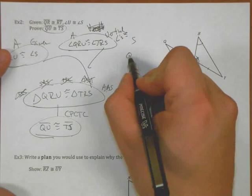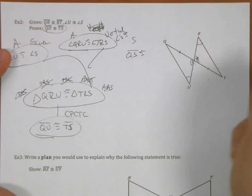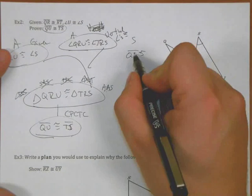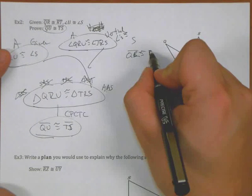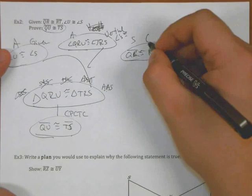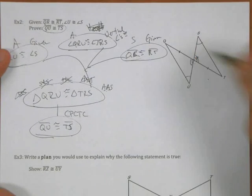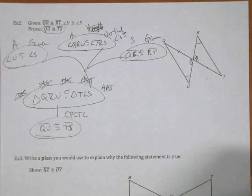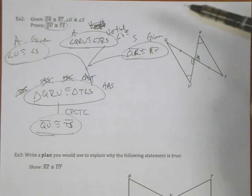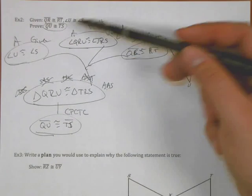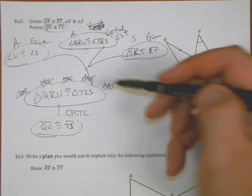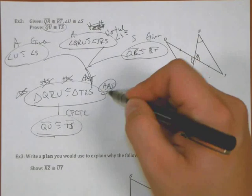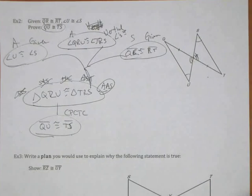And I'm given the side QR congruent to RT. So when I write my proof out, as we've done at this point, we'll write going top down. But the flow of the proof is as follows.